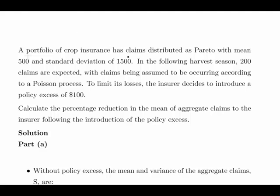In this presentation we're going to look at the Pareto distribution. This is the Pareto type 2 distribution and it's used quite a lot in actuarial sciences and financial maths. A portfolio of crop insurance has claims distributed as Pareto type 2, also known as the Lomax distribution, with mean 500 and standard deviation 1,500. In the following harvest season 200 claims are expected with claims being assumed to be occurring according to a Poisson process.